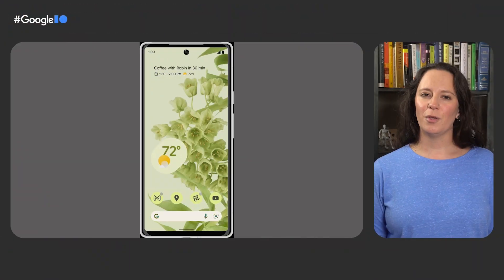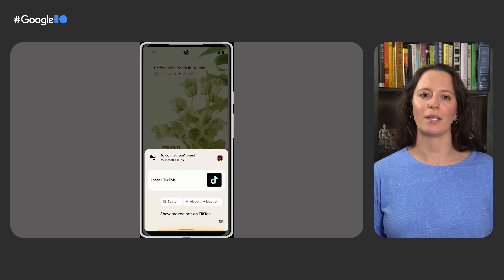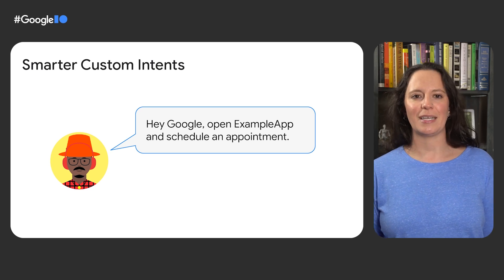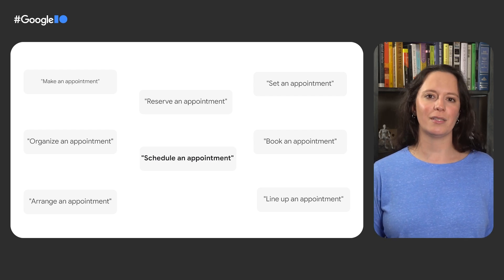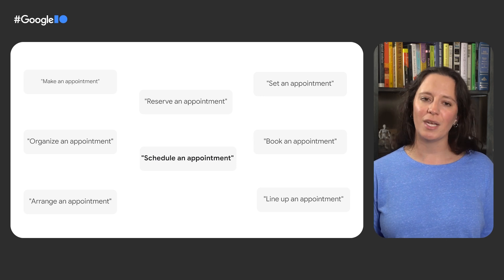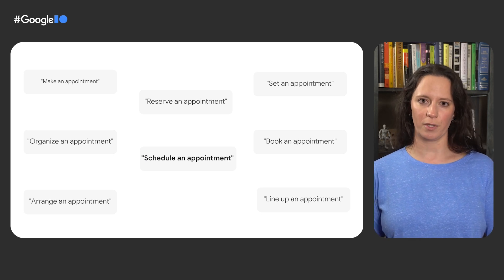Let's see how this looks when a user doesn't have the requested app installed. If a user says 'show me recipes on TikTok,' Assistant will open directly to the TikTok App Play Store page, encouraging installation. We've also improved custom intents — for apps using custom intents such as 'schedule an appointment,' machine learning-based grammar expansion can now automatically increase the number of queries Assistant identifies that can trigger an app, meaning developers don't have to manually model as many query patterns. These features are automatically available to users without any additional development work required on your mobile app.